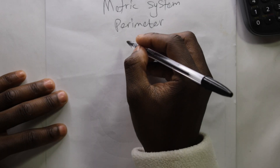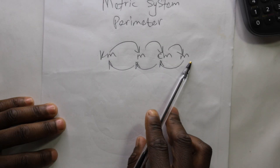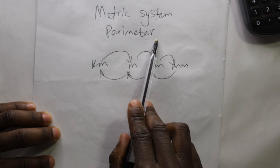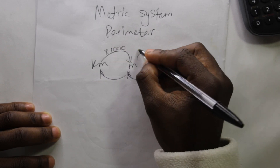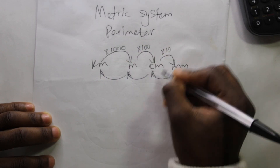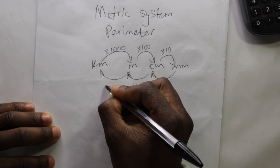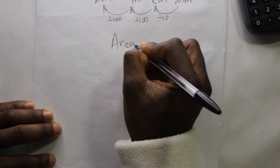Now let's go on to the metric system for perimeter. It is similar to the one we just used for distance: kilometers, meters, centimeters, and millimeters. Perimeter is a measurement around the edge of an object. Here we multiply by one thousand, multiply by one hundred, multiply by ten, divide by ten, divide by one hundred, divide by one thousand.